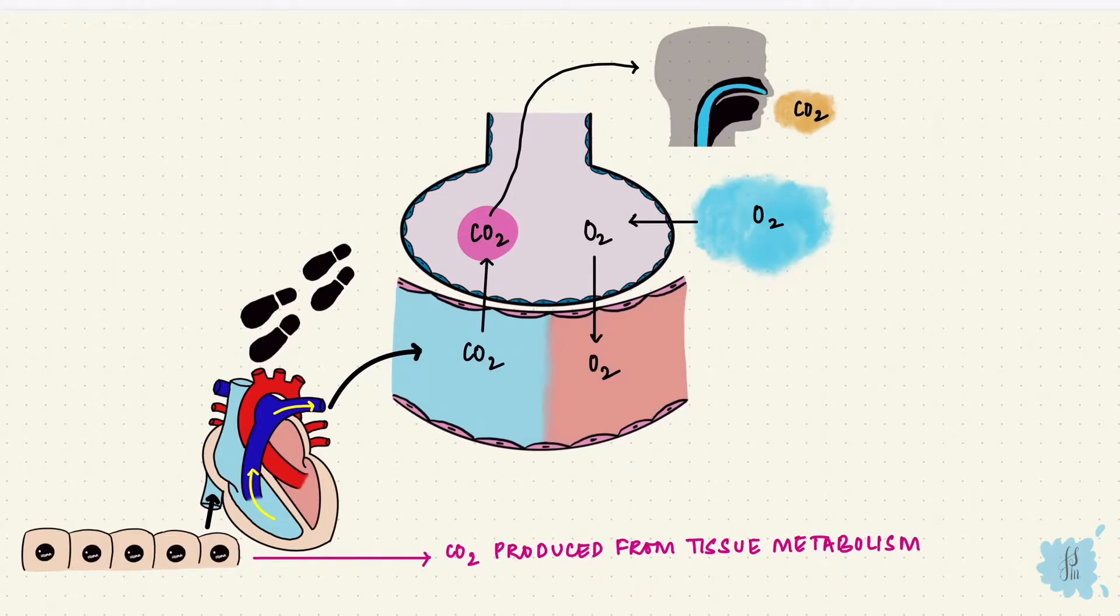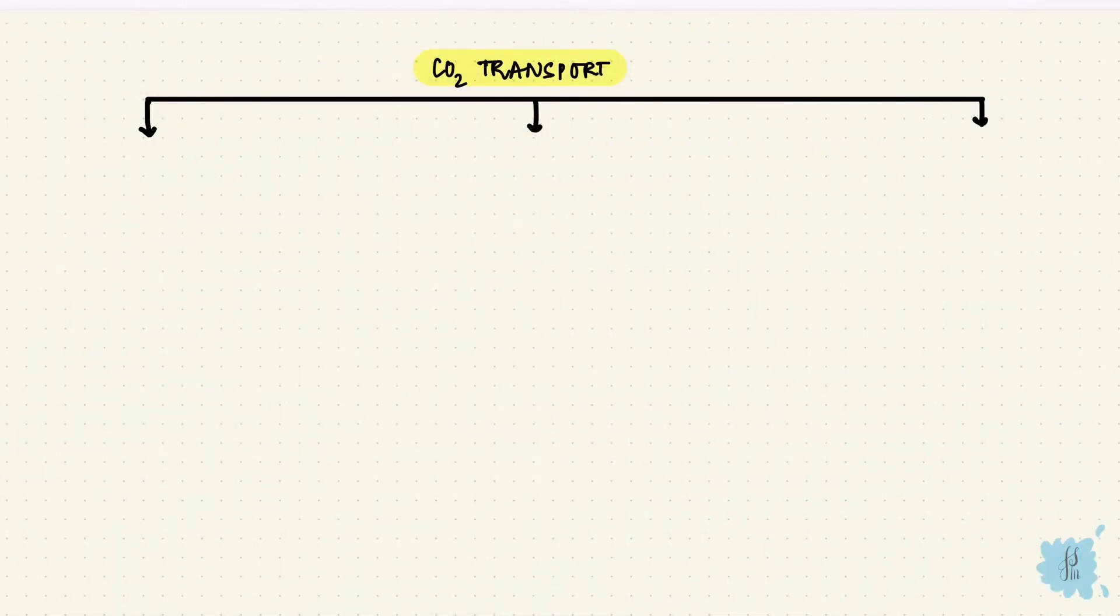The tissues use oxygen and form carbon dioxide. The transport of carbon dioxide from the tissues through systemic circulation and then pulmonary circulation happens in three forms: as dissolved carbon dioxide, a bound form, and a chemically modified form.